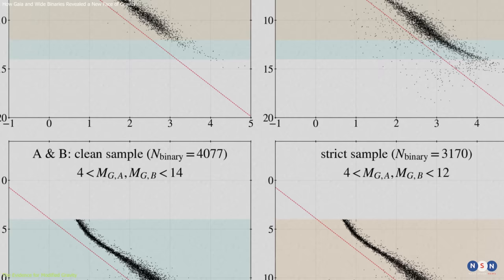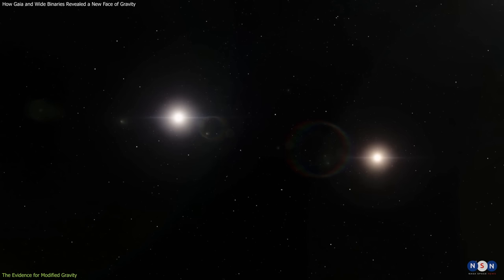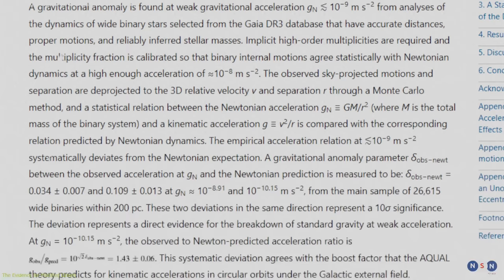The study found that for accelerations lower than about 0.1 nanometers per second squared, the observed acceleration is about 30 to 40 percent higher than the Newton-Einstein prediction. The significance of this result is very high, meeting the conventional criteria of 5 sigma for scientific discovery.